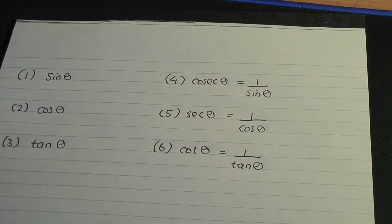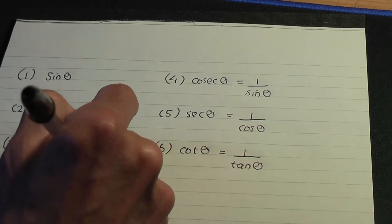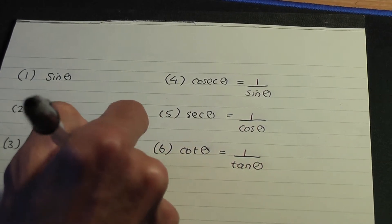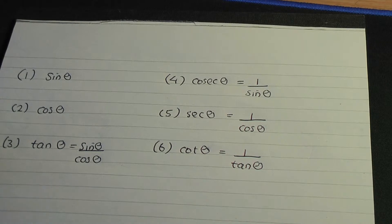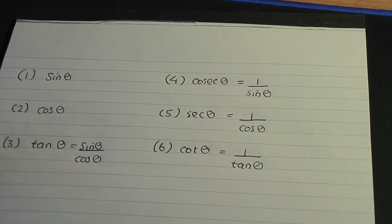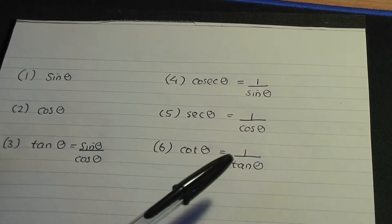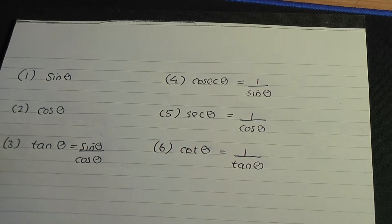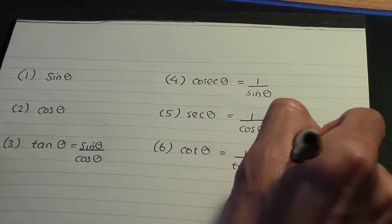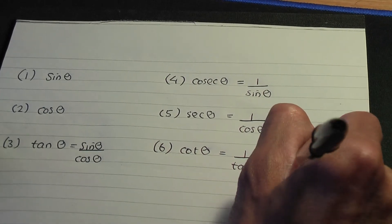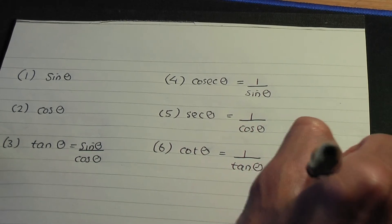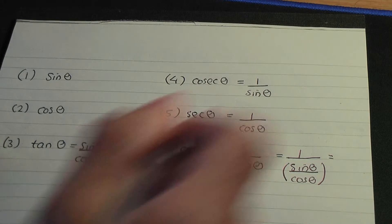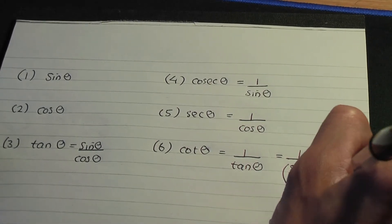Furthermore, there is a relation for tan. Tan is the same as sine theta divided by cos theta. So, these are the six ratios, and since tan is sine over cos, we could derive another relationship for cot theta — number six — because cot is one over tan. And since tan is sine over cos, let's replace tan by sine over cos to get another relation for cot. So that gives us one divided by sine theta over cos theta, which we can rewrite as cos theta divided by sin theta.